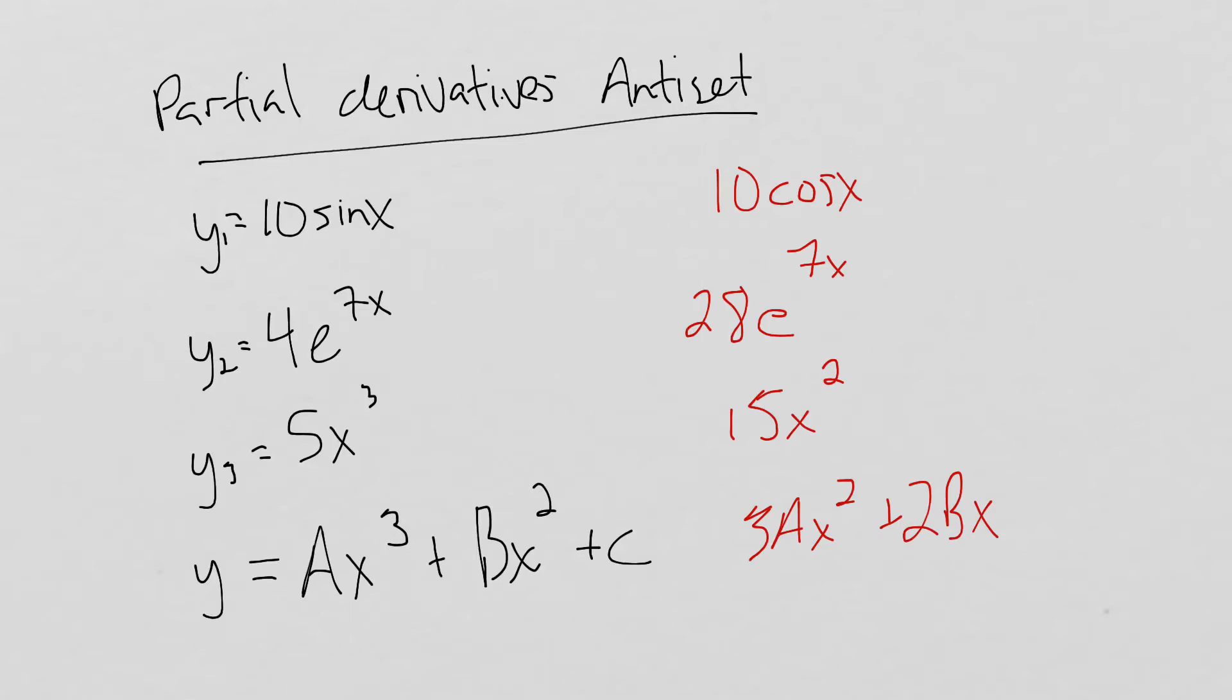Okay, so hopefully you agree with me in red there. This one derives to 10 cosine x. This one, there's a tiny bit of chain rule, so I've got to do 4 times the 7, and then I've got e to the 7x. Here I do 3 times 5. That gives me 15x squared. And this one, I multiply the a by 3 for my power rule. I get 3ax squared plus 2 times bx. So hopefully you're good with that.